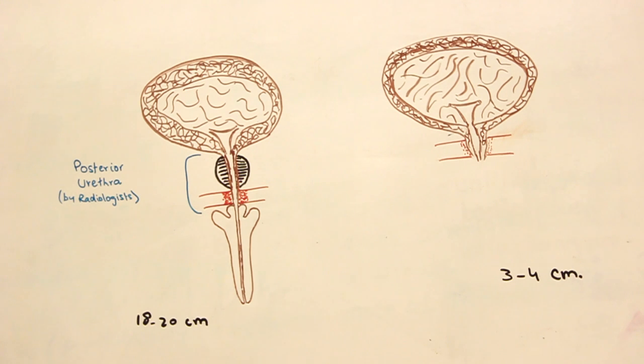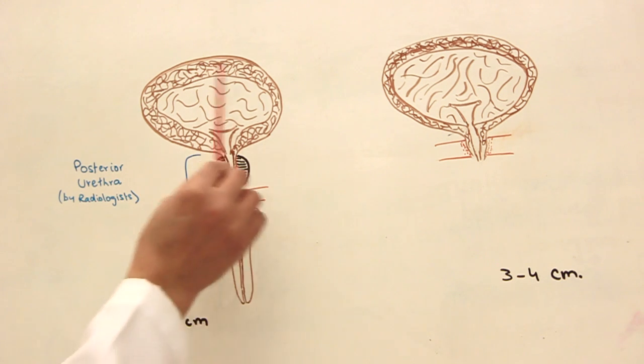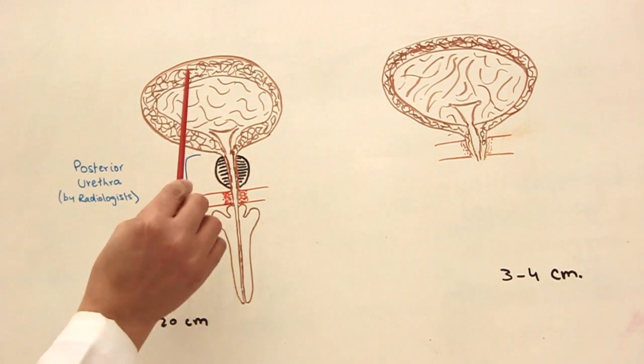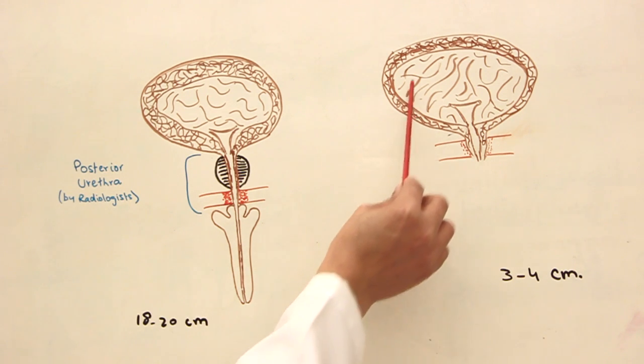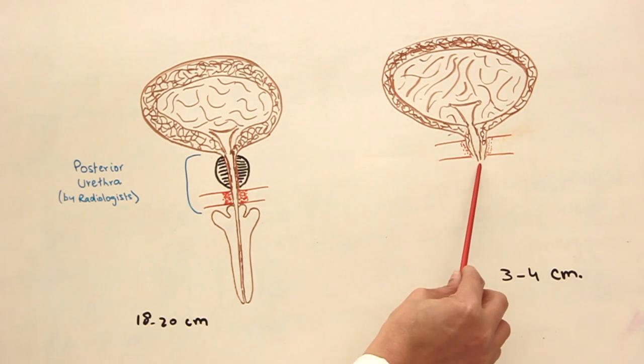I'm going to talk about the urethra, which is the terminal exit point of urine. In front of you are two elementary drawings.